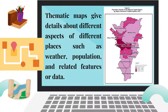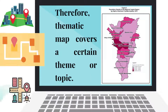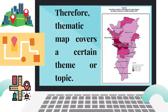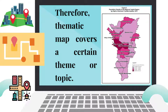Thematic maps give details about different aspects of different places such as weather, population, and related features or data. Therefore, a thematic map covers a certain theme or topic.